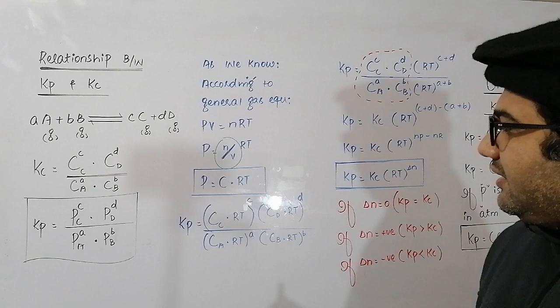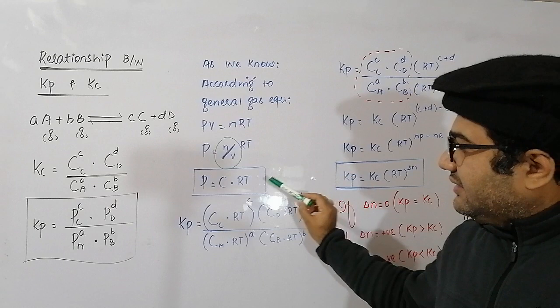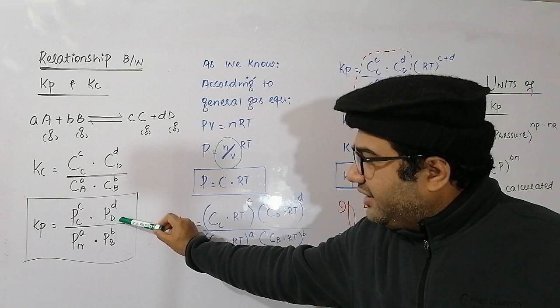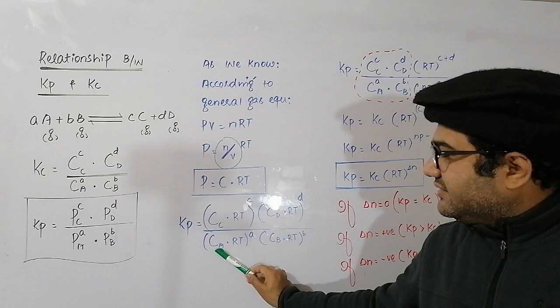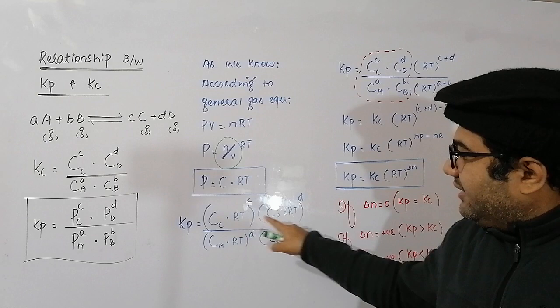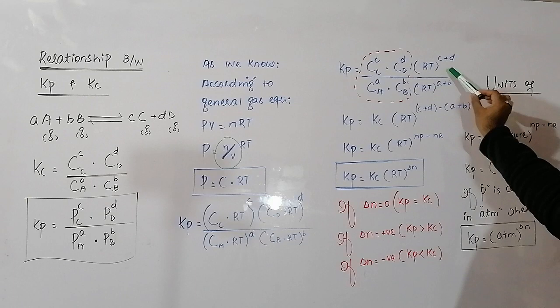Now replace the values of pressure in the Kp expression. Kp becomes: concentration of C times RT raised to power c, times concentration of D times RT raised to power d, divided by concentration of A times RT raised to power a, and concentration of B times RT raised to power b. RT becomes a common factor, so Kp equals concentration of C raised to power c times concentration of D raised to power d, divided by concentration of A raised to power a times concentration of B raised to power b, multiplied by RT raised to power (c+d) divided by RT raised to power (a+b).